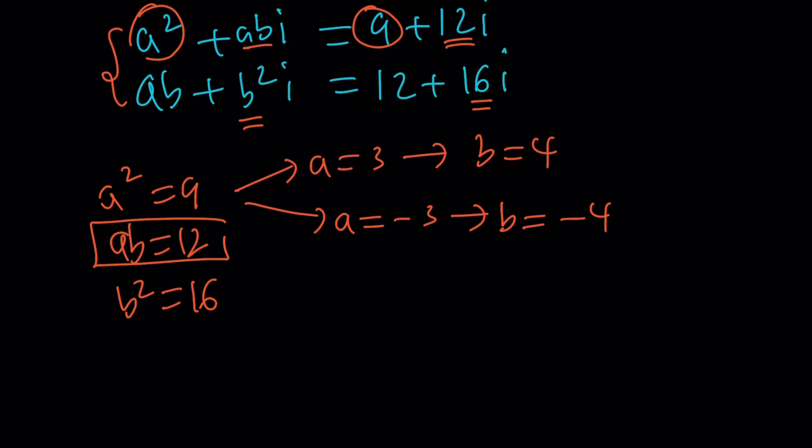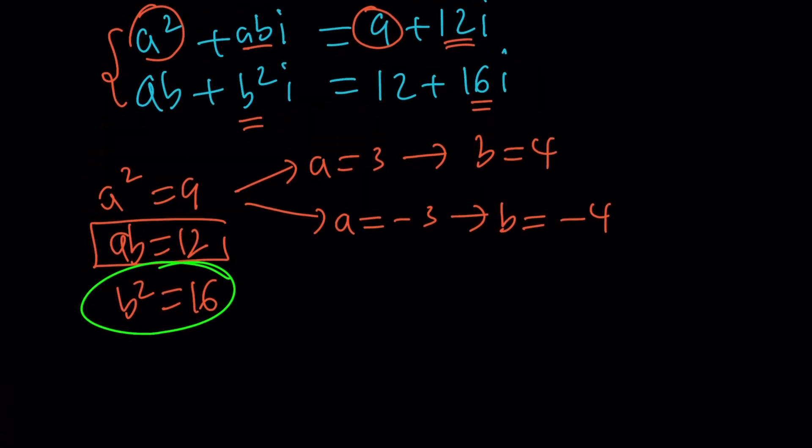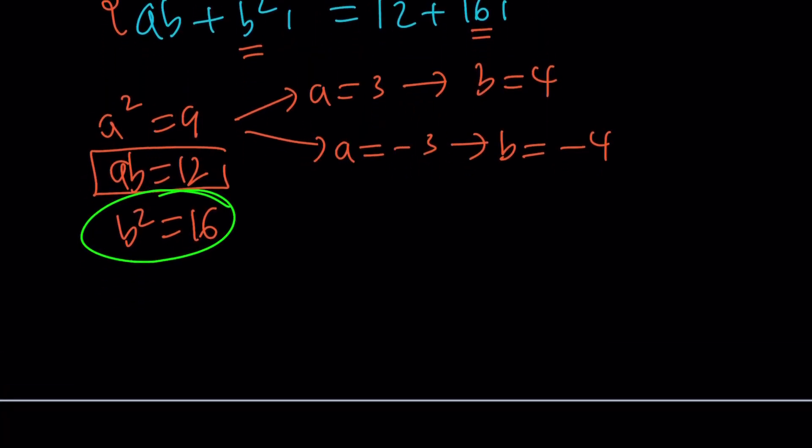And since we wrote our Z, and by the way, these two values also satisfy the third equation, and they should. Otherwise, it's not going to be consistent. So based on these AB values, we can go ahead and write two solutions.